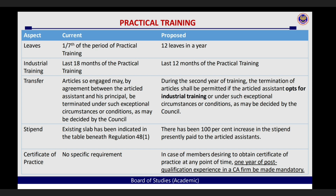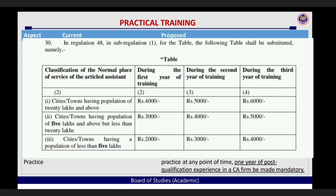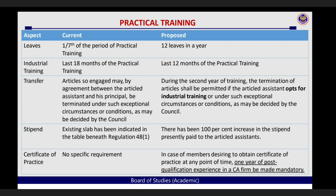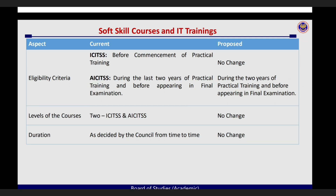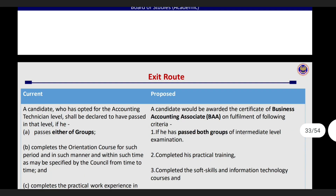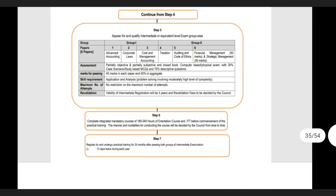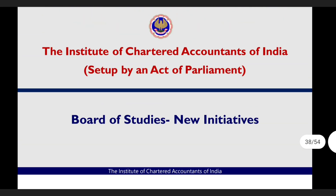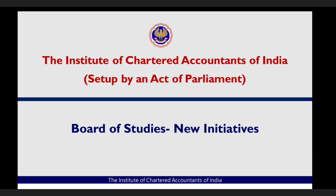Jisme one-seventh allowed hai, change hokar 12 leaves in a year, 24 leaves in two years allowed hain. Industrial training aap last ke 18 months mein bhi kar sakte hain. Abhi aapko allowed hokar 12 months mein kar sakte the. Aur jo stipend hai woh change hokar 100% increase hokar double kar diya gaya hai. Change hokar online library, online free classes bhi available karayi gayi hain.